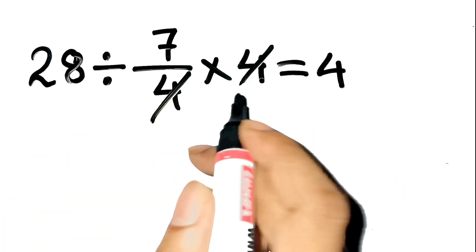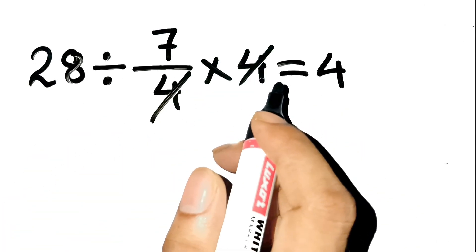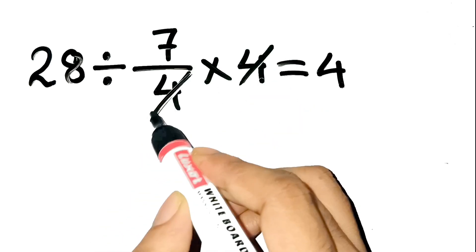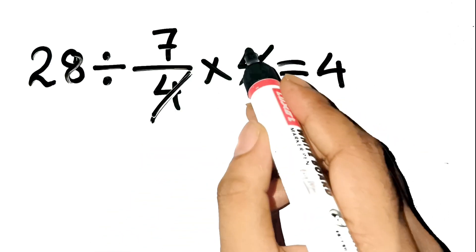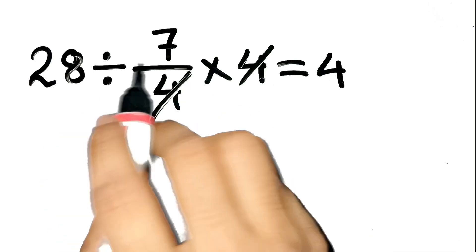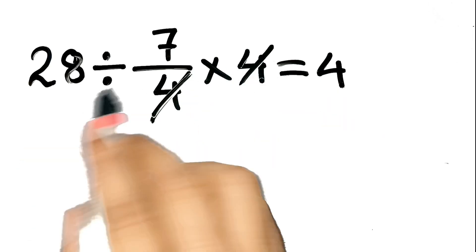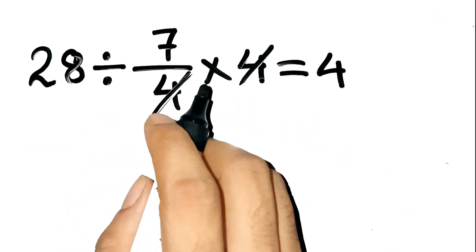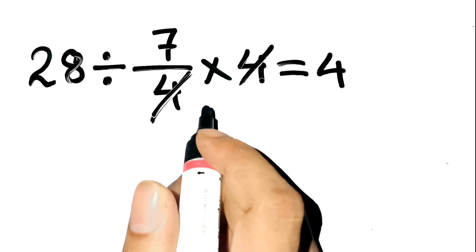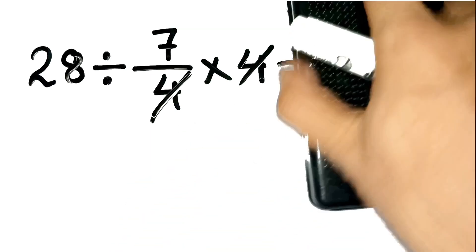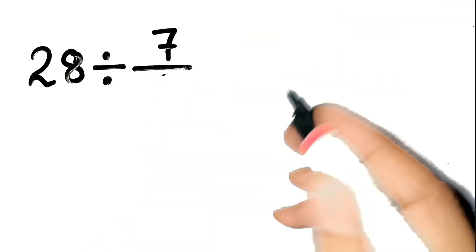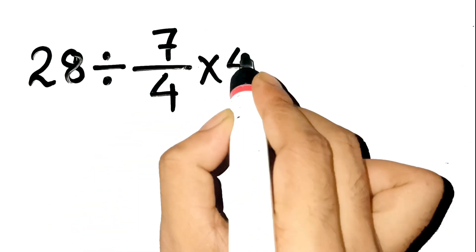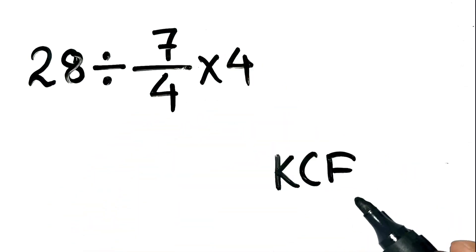So why do people get this wrong? Many assume you can just cancel the 4 in the denominator with the 4 at the end, and then finish the division left to right. But that's not how fractions and division interact. When you have division by a fraction, you need to apply the keep-change-flip rule, or KCF for short.